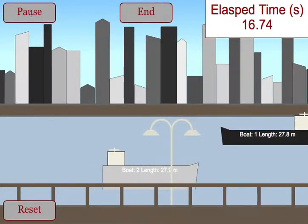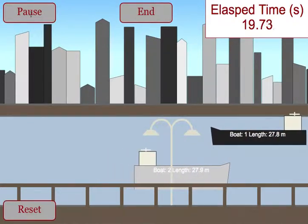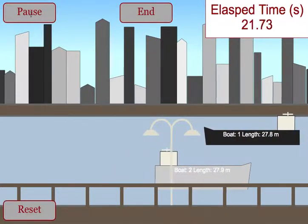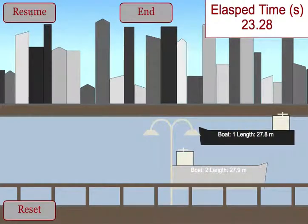They then allow the boats to continue to travel. When the back of the boat reaches the lamppost, students will pause again and they will get a value for the time at which the back of the boat travels past the lamppost.